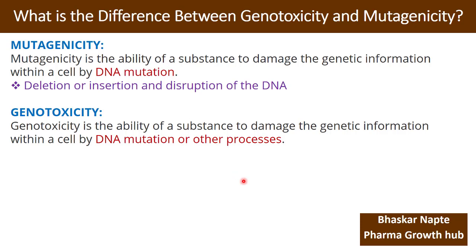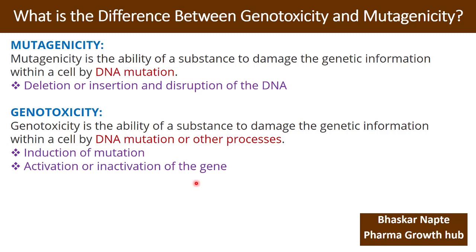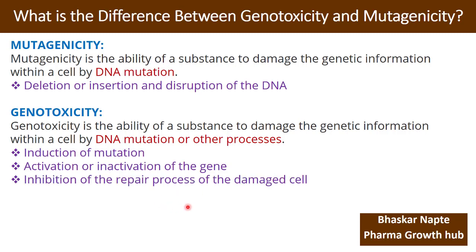Let us understand what those other processes are, in addition to DNA mutation. The first is the induction of mutation, which is part of genotoxicity. Apart from that, activation or inactivation of a gene is also part of genotoxicity. Additionally, inhibition of the repair process of a damaged cell — since cell repair is a natural process — if a drug substance or impurity inhibits this repair process, that substance is genotoxic in nature.